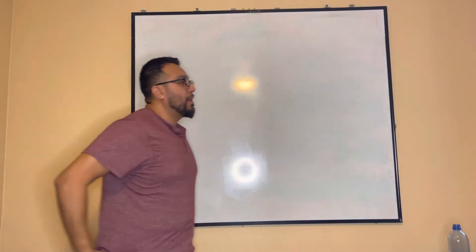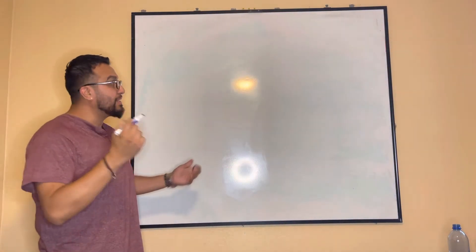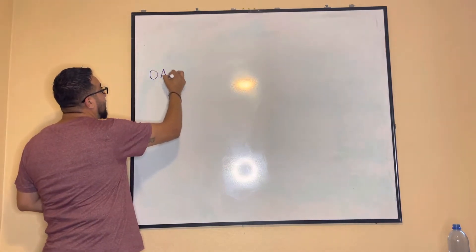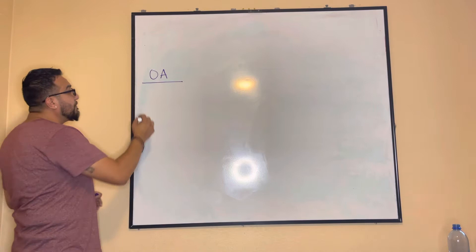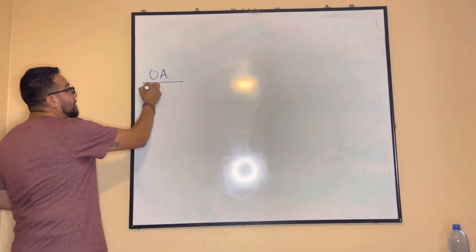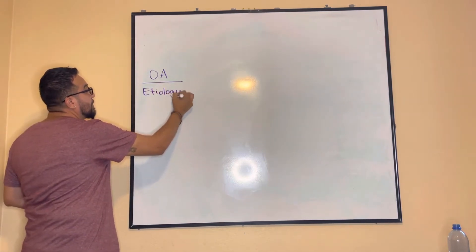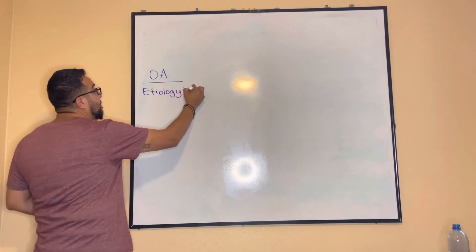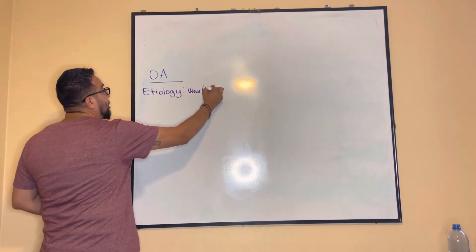When it comes to arthritis, there are three basic types. First is osteoarthritis, and you have to know the etiology — meaning how the condition actually develops. Osteoarthritis is usually caused by wear and tear.